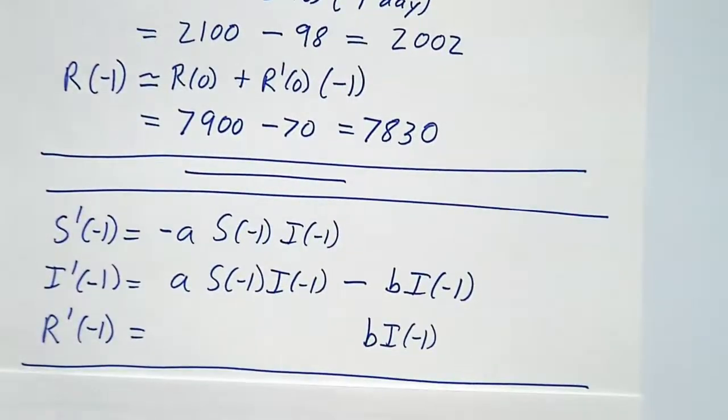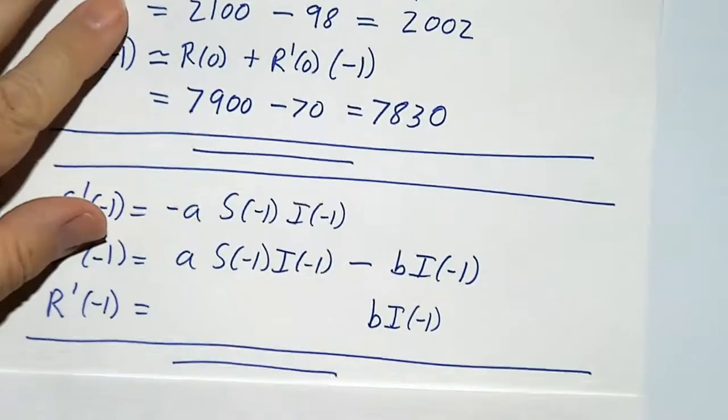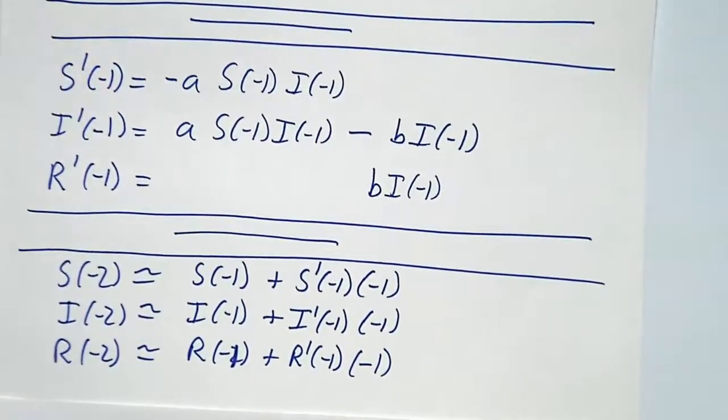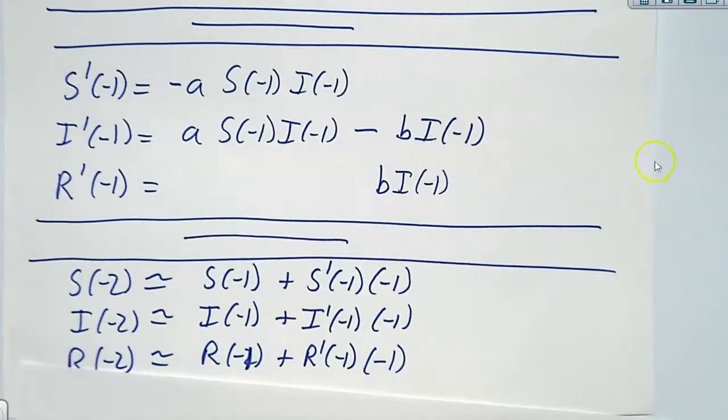And then we use those equations to figure out how fast things were changing yesterday, and we then take another step backwards to figure out where things were two days ago, three days ago, four days ago, as far back as you want. Whether predicting the future or figuring out what happened in the past, if you go one step at a time, you can do it.